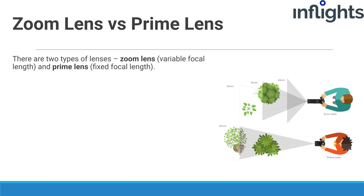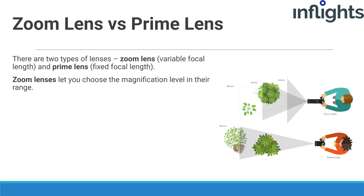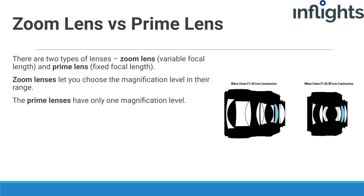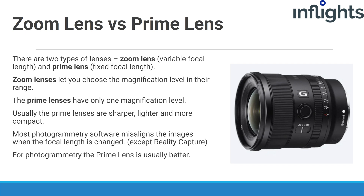There are two types of lenses: zoom lenses with variable focal length and prime lenses with fixed focal length. Zoom lenses let you choose the magnification level within their range, while prime lenses have one fixed magnification level. Usually prime lenses are sharper, lighter, and more compact. Most photogrammetry software misaligns images when the focal length is changed.